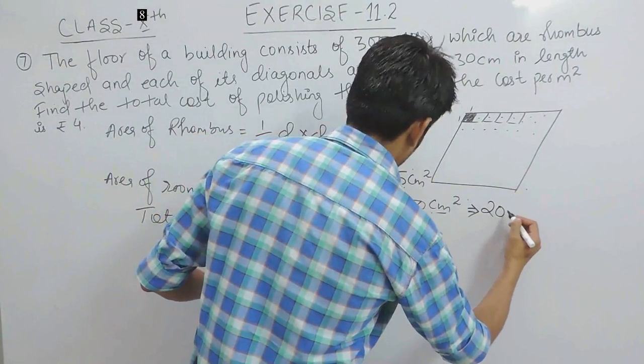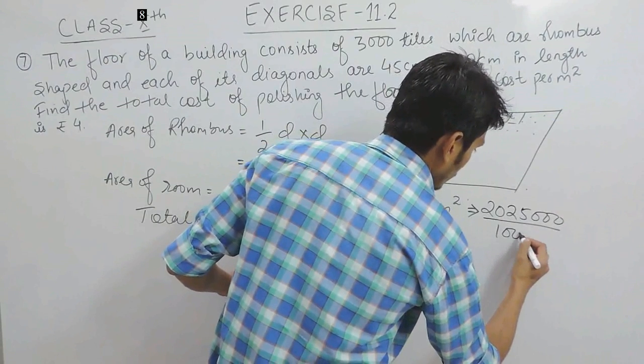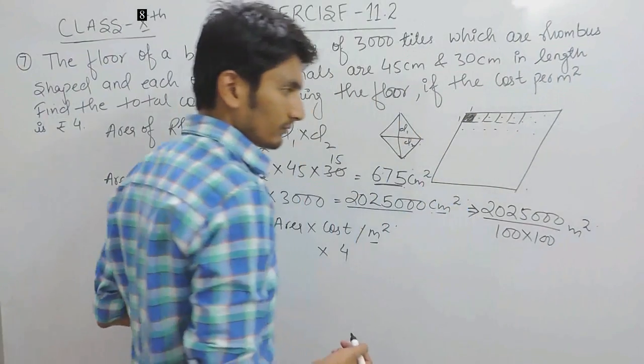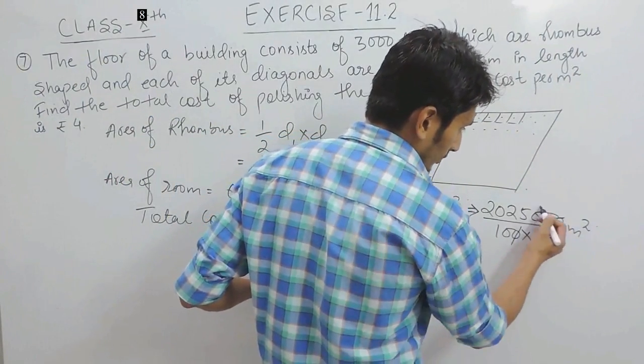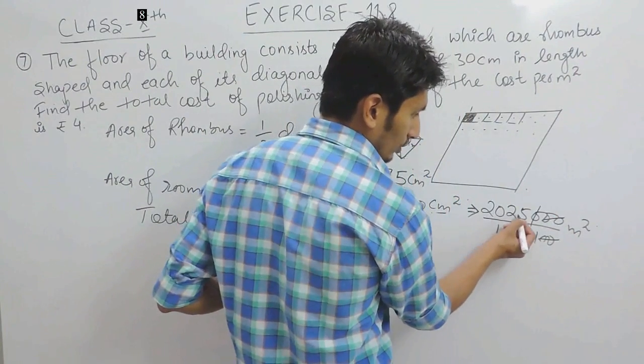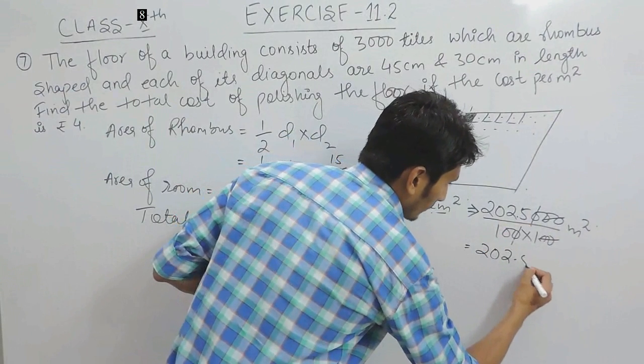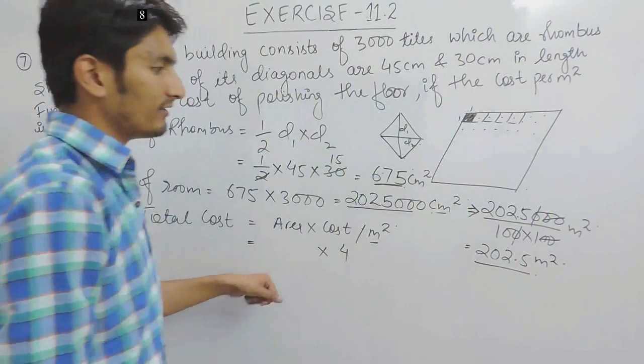So the area in meters will be equals to this much. Now, 2, 0 cancel with 2, 0, 1, 0 cancel by 1, 0 and 1, 0, we will put a decimal sign here. So our area in meter would be 202.5.